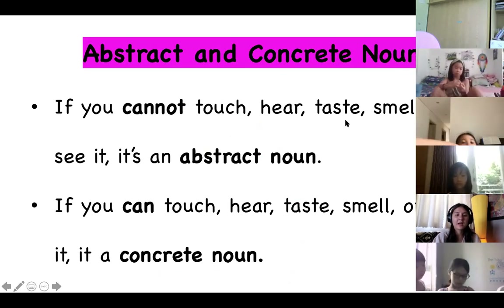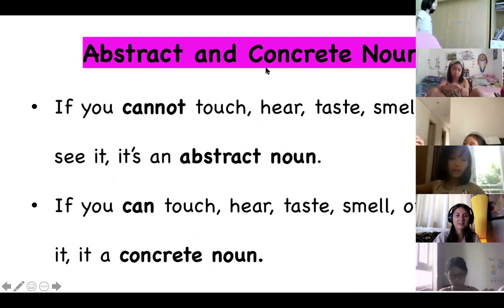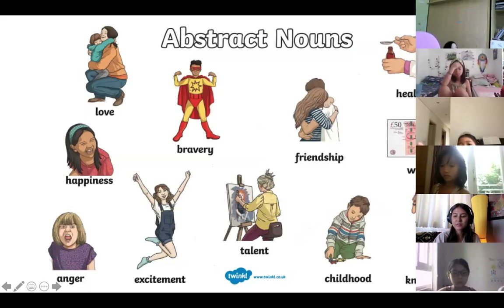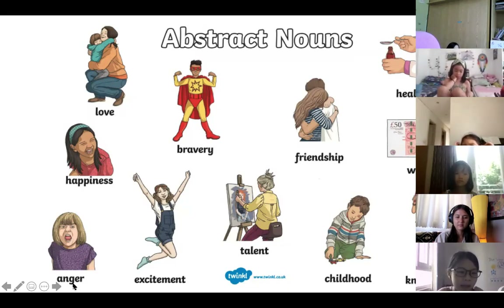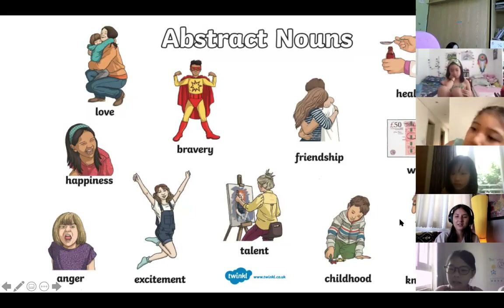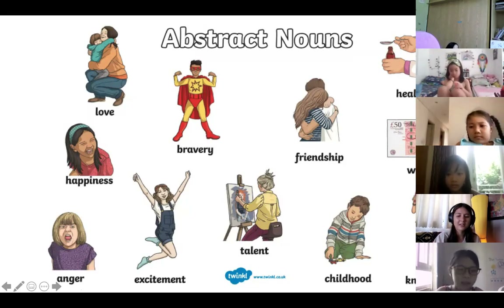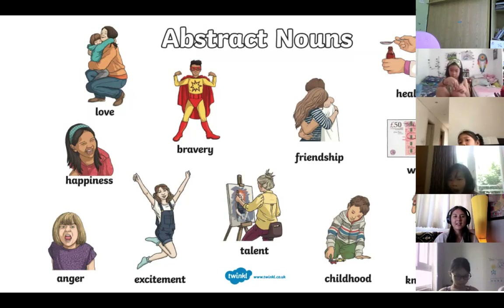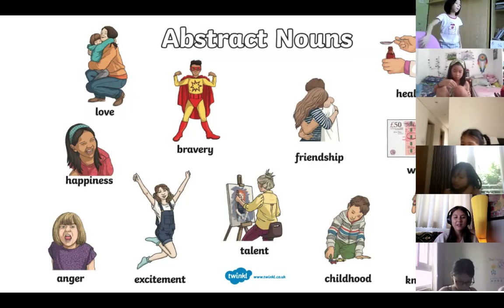If you cannot touch, hear, smell, or see it, it's an abstract noun. If you can touch, hear, taste, smell, or see it, it's a concrete noun. Here are more examples: love, bravery, friendship, health, happiness, anger, excitement, talent, childhood, knowledge, wealth. These are all examples of abstract nouns. They are abstract because while they are things, you can't touch them, see them, hear them, smell them, or taste them.